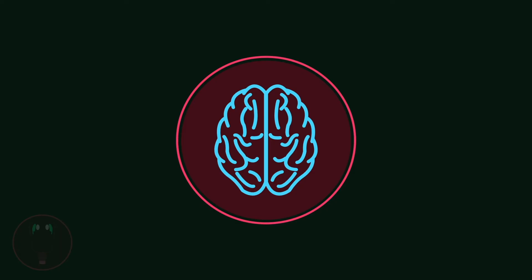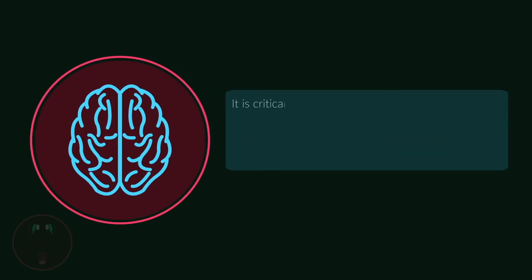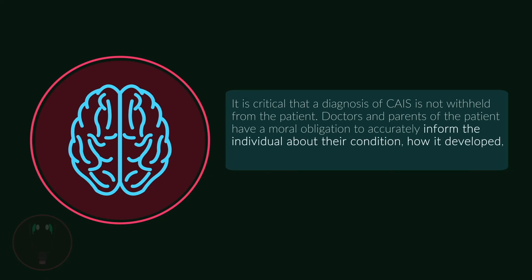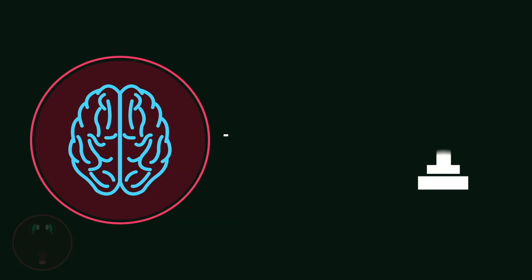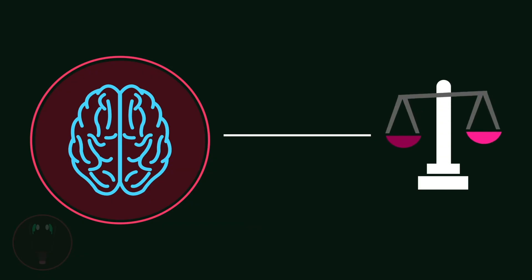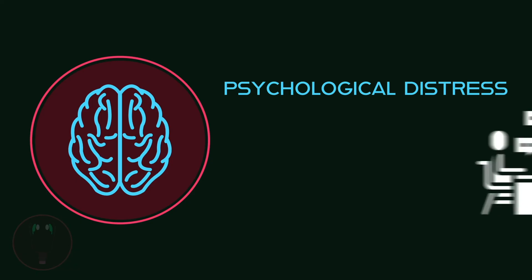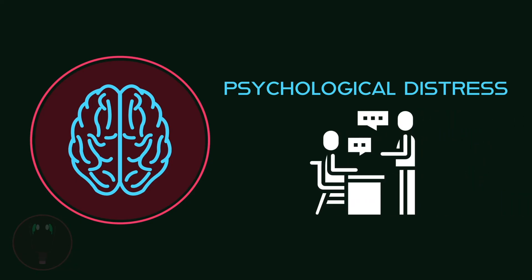There are important psychological issues to address if one is diagnosed with CAIS. First, it's critical that a diagnosis is not withheld from the patient. Doctors and parents of the patient have a moral obligation to accurately inform the individual about their condition, how it developed, and what the treatment options are. The method and timing of providing the information depends upon the patient's age and cognitive development. Second, a diagnosis of CAIS, like other DSDs, often leads to psychological distress, and it's critical that trained psychologists and counselors are involved.